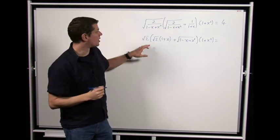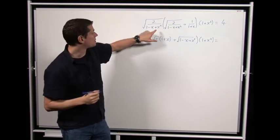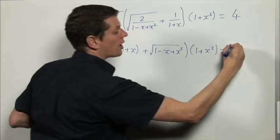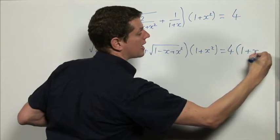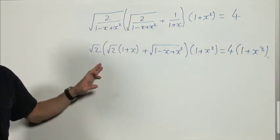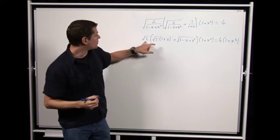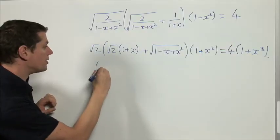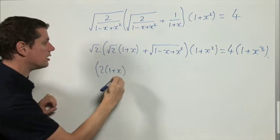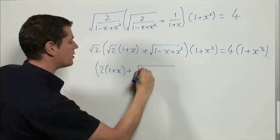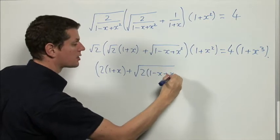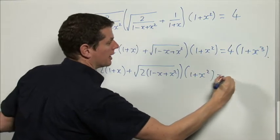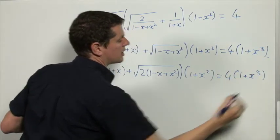On the right-hand side we're multiplying by (1 − x + x²) and by (1 + x), and we know those multiply to give 1 + x³. Multiplying out the √2 with its bracket gives 2(1 + x) + √2·(1 − x + x²)·(1 + x²) = 4(1 + x³).